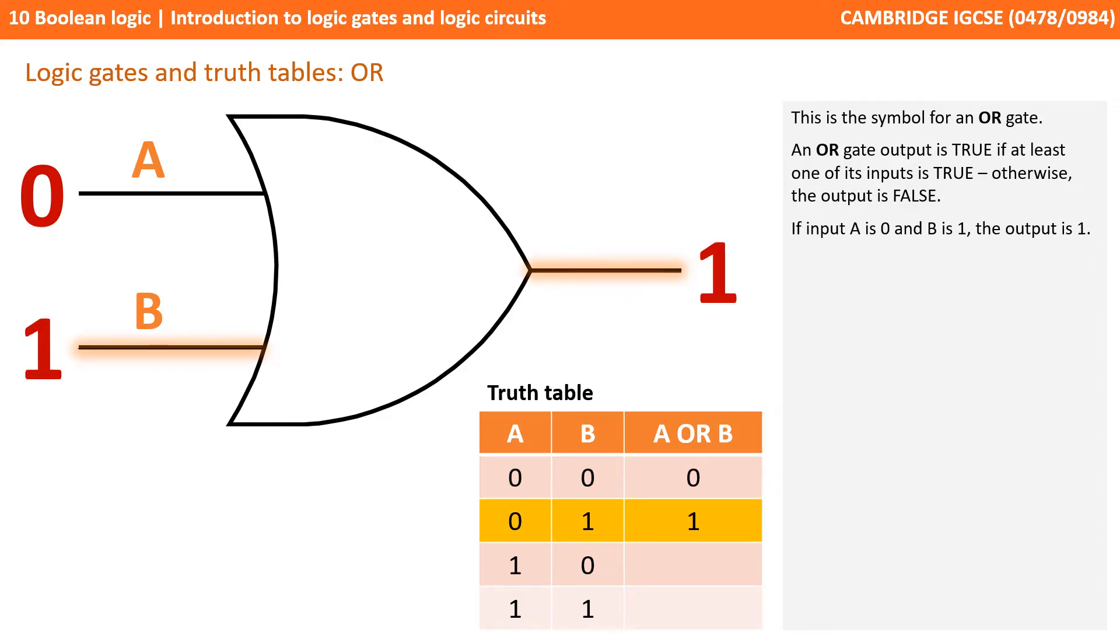If A is 0 and B is 1, the output is 1. If A is 1 and B is 0, the output is 1. And likewise if both inputs are 1, the output is 1.